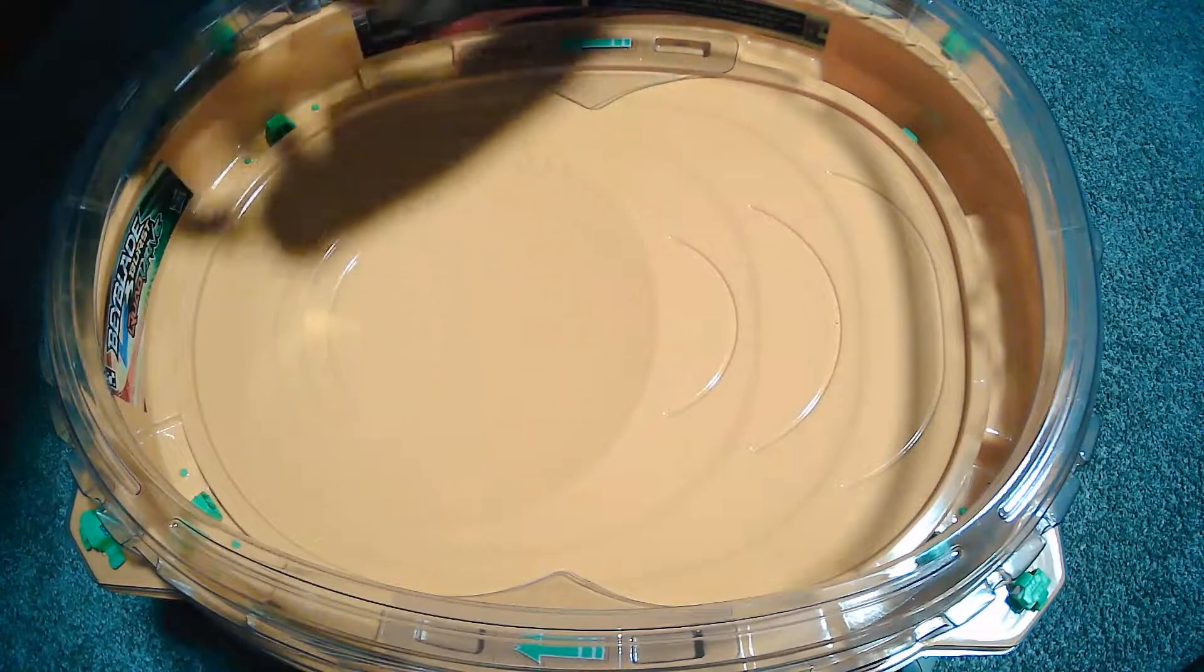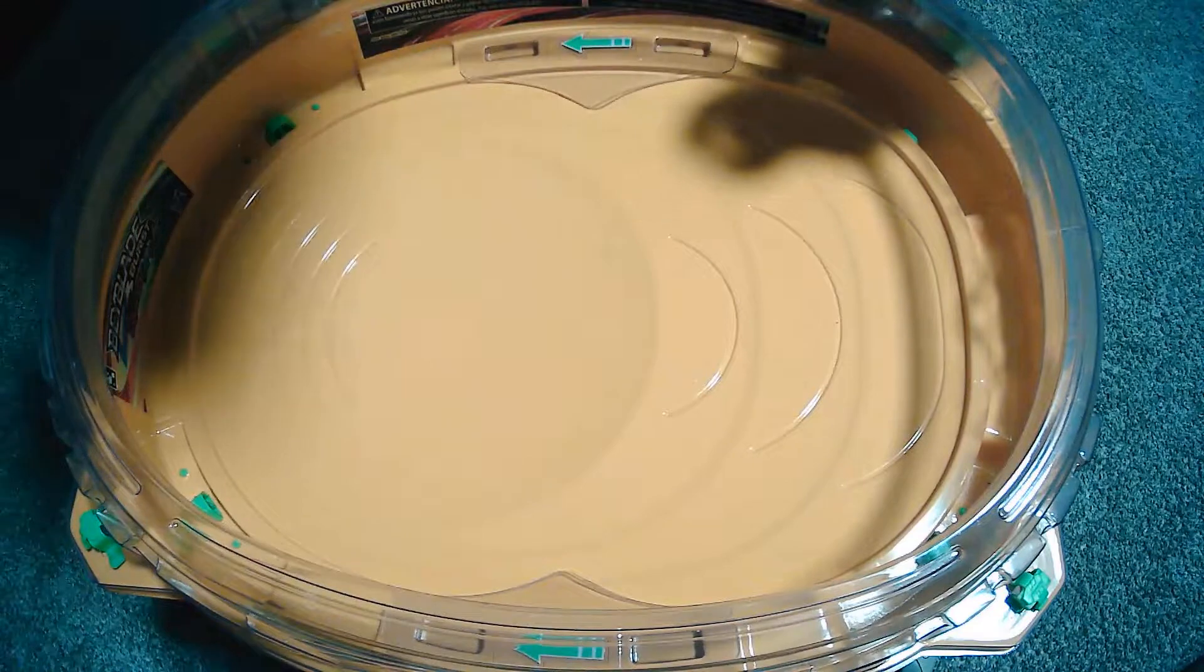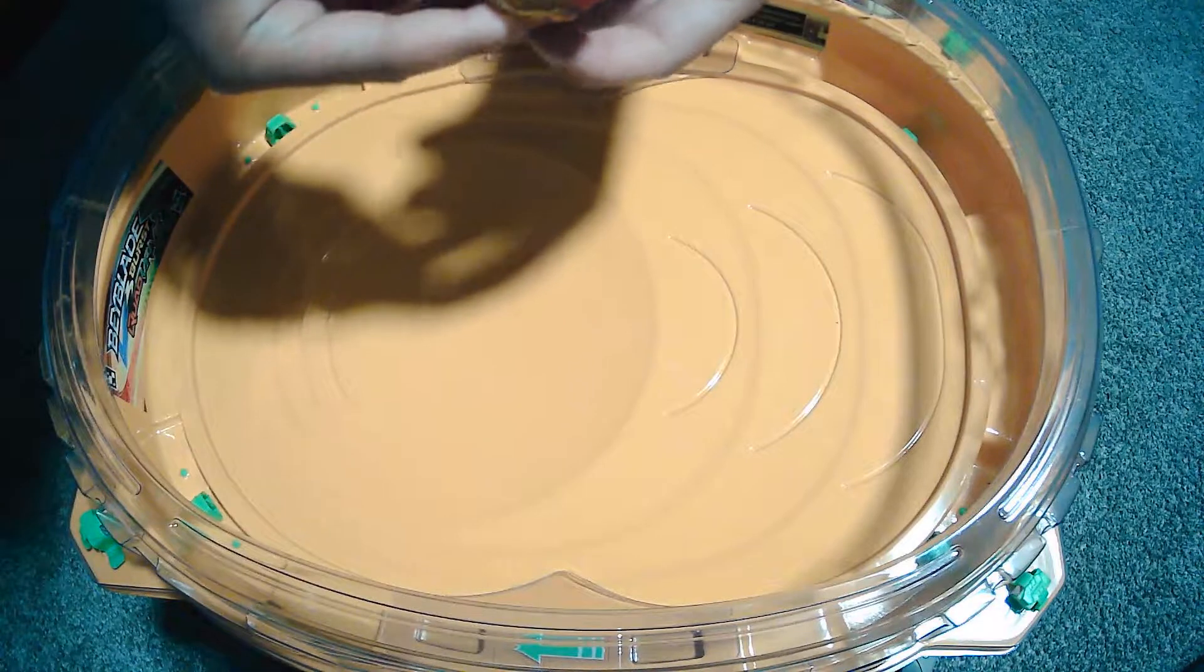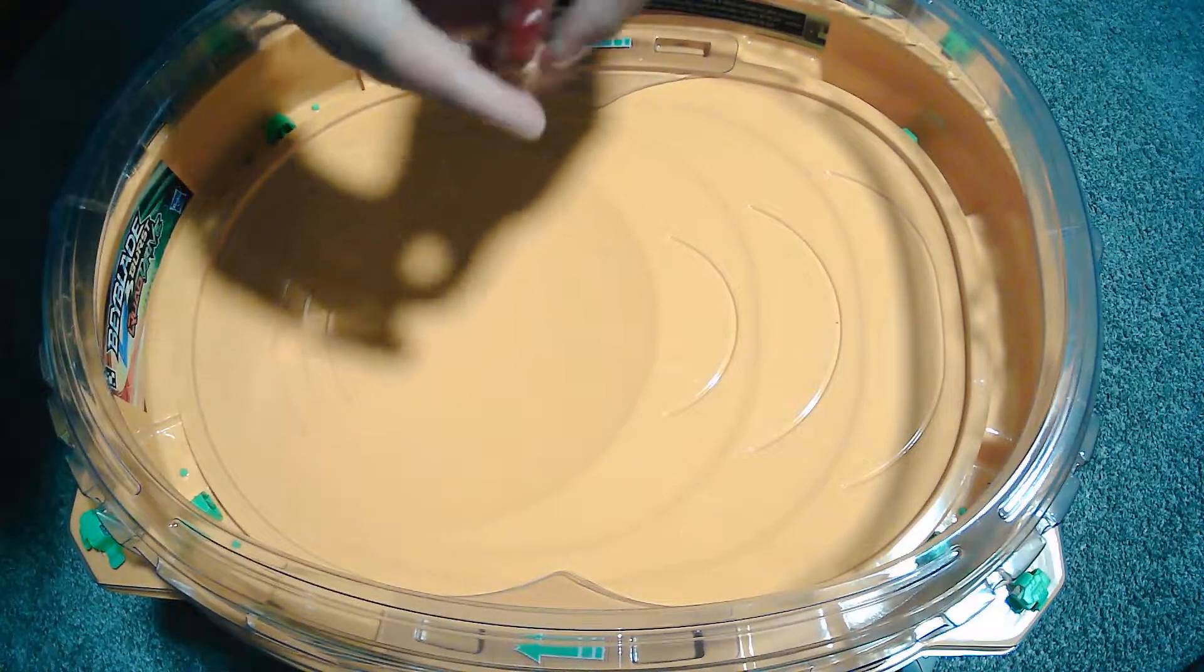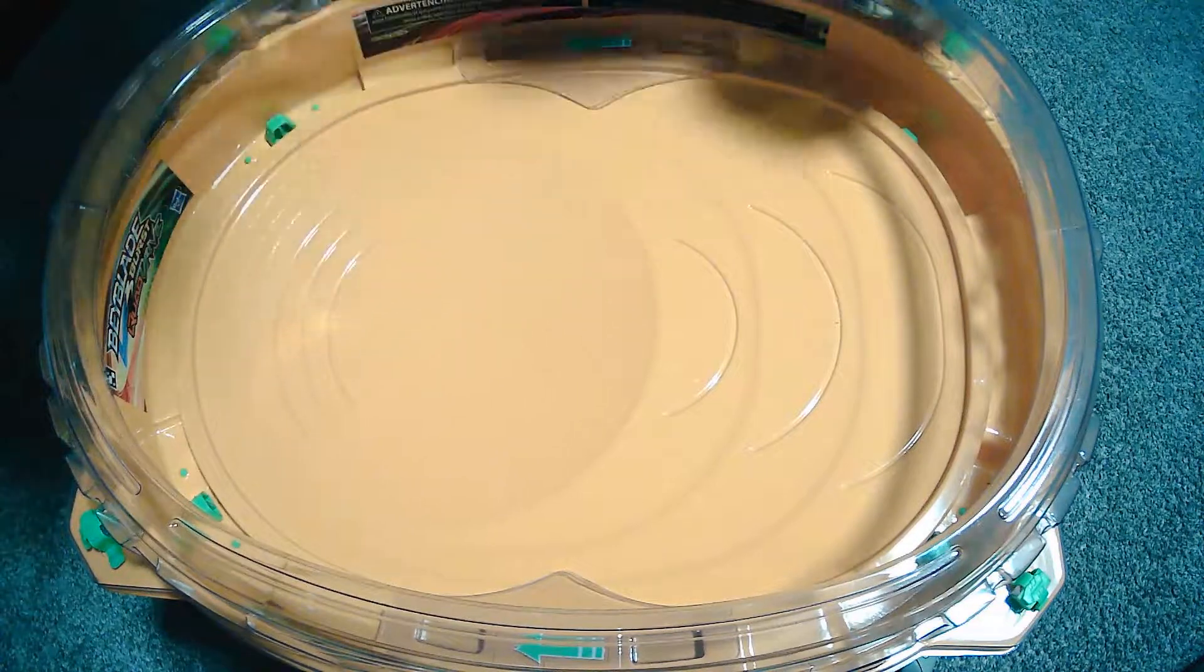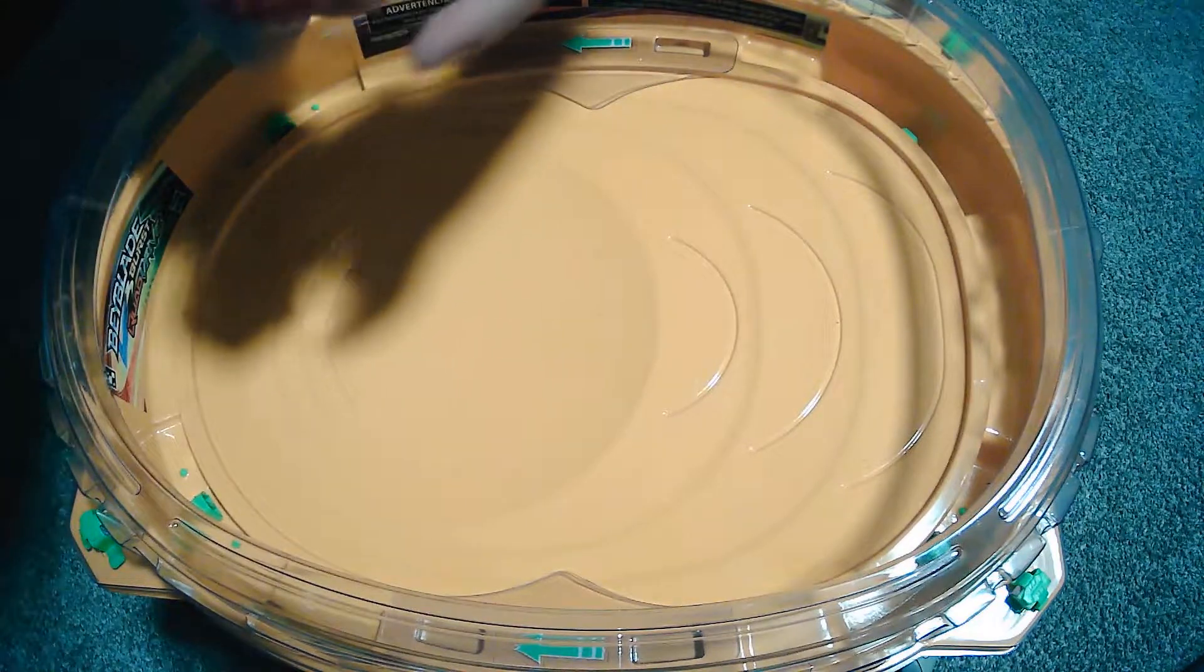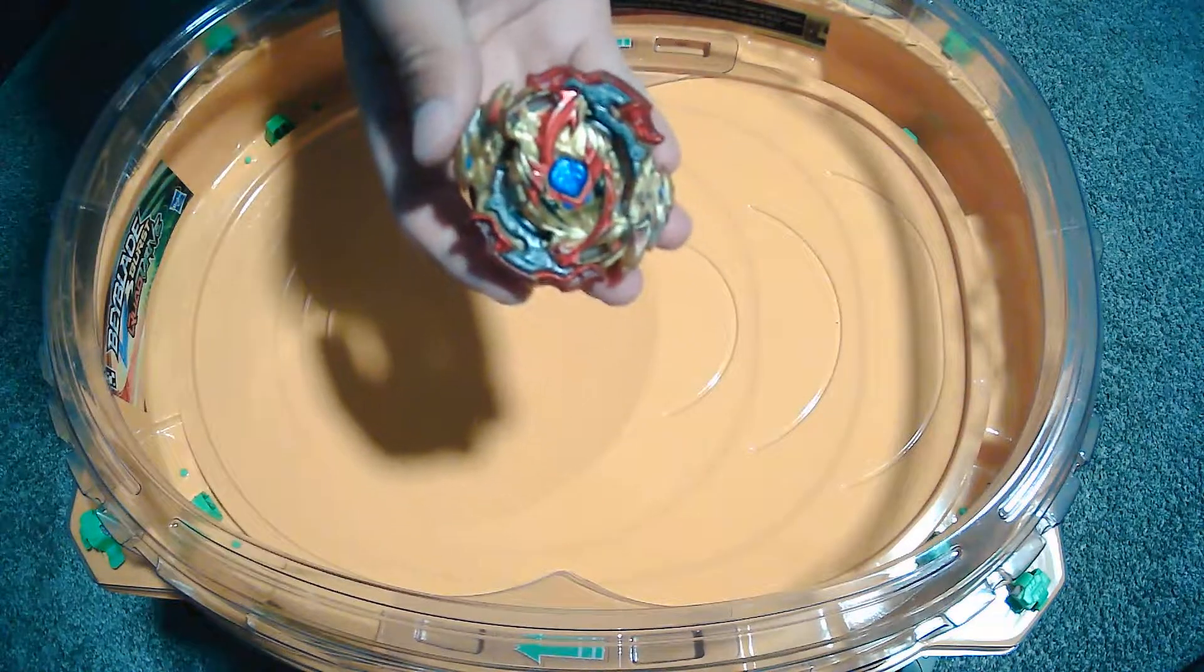Now, we're going to put it in right spin. So, if you don't know how to change it to right or left spin, you just take the chip out. And, you twist the layer. And, you put the chip back on. Lock it in. And, put the Beyblade back together. And, there. Lord Spryzen is in right spin now.